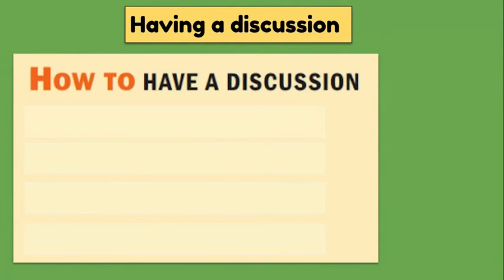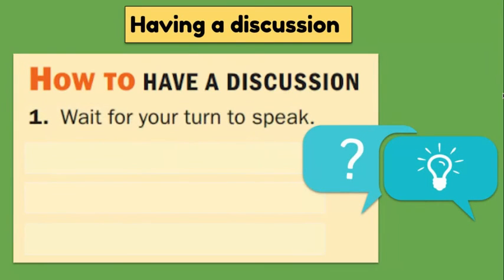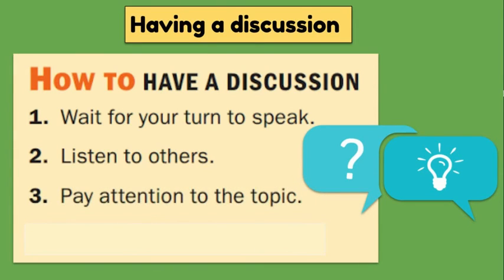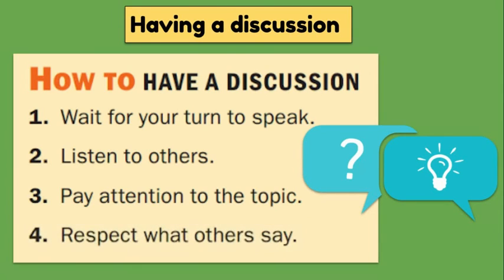There are different ways to have a discussion and it's a little bit different than a conversation. Conversations can be had with your friends or your family, but when you have a discussion, you want to be able to ask questions and give information as well. So it's a little bit more academic. First, we want to wait for our turn to speak. Then we want to be able to listen to other people, listen to their ideas and their questions. We want to pay attention to what they're saying so that we can also offer feedback. And we want to respect what the other people are saying.